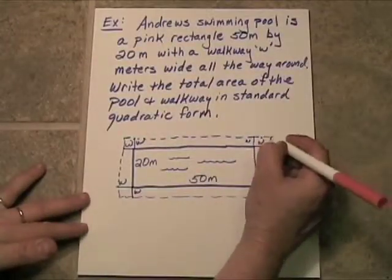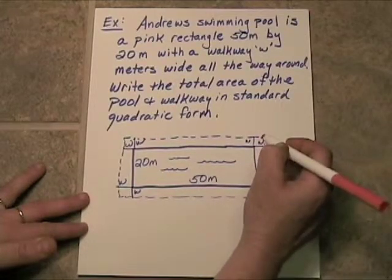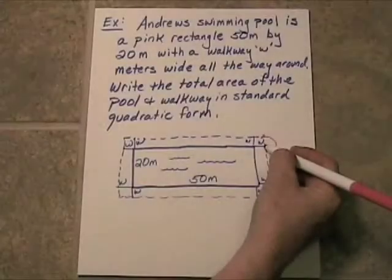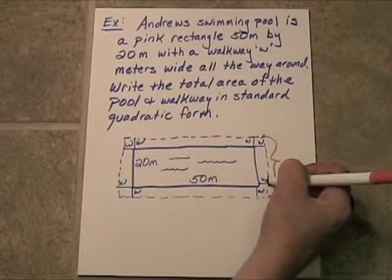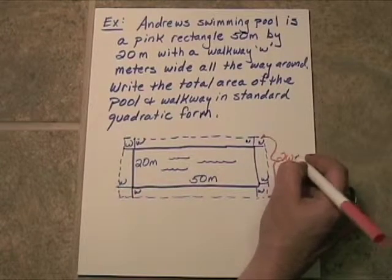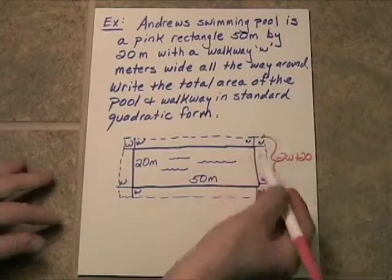Alright, so let's figure out how long is it from this corner of the walkway down to this corner of the walkway. A w, and then 20 meters, and then another w. So it's two w's plus 20 meters this way.